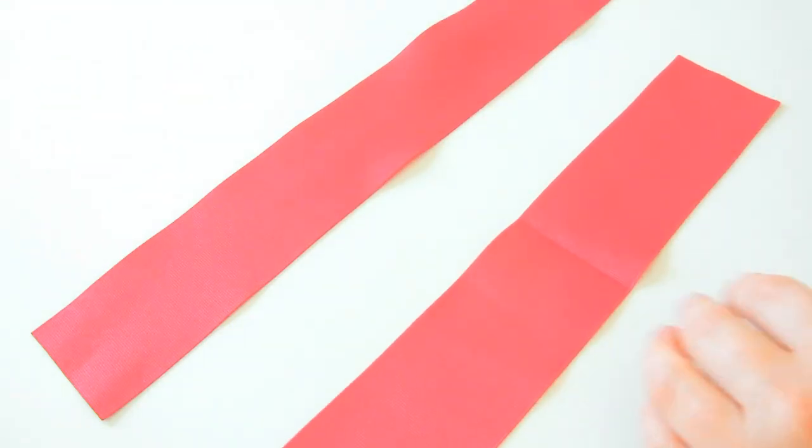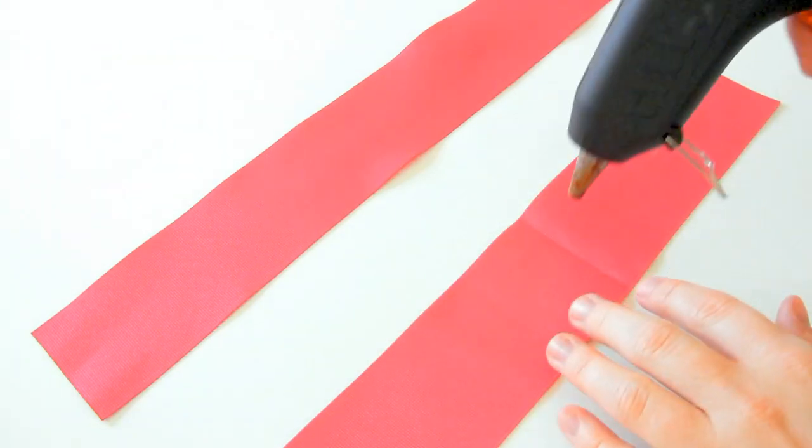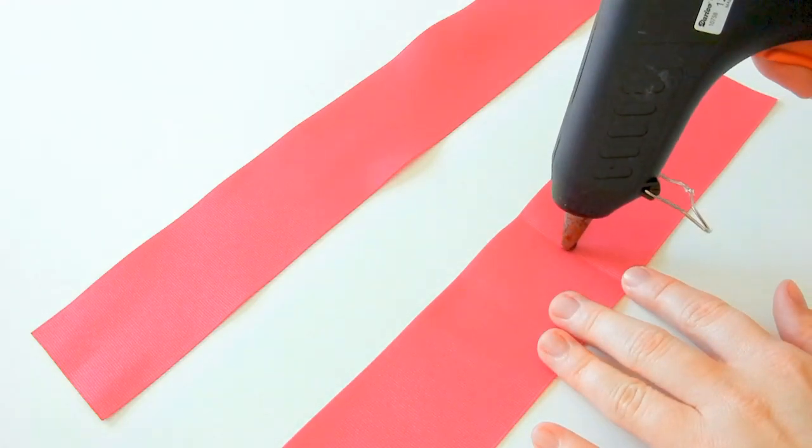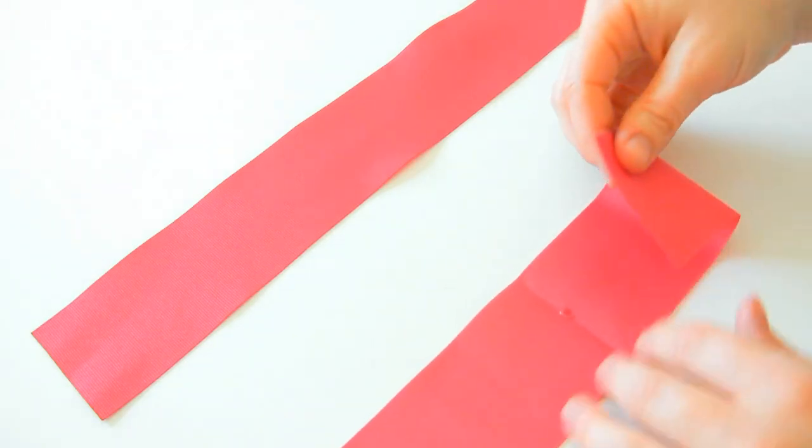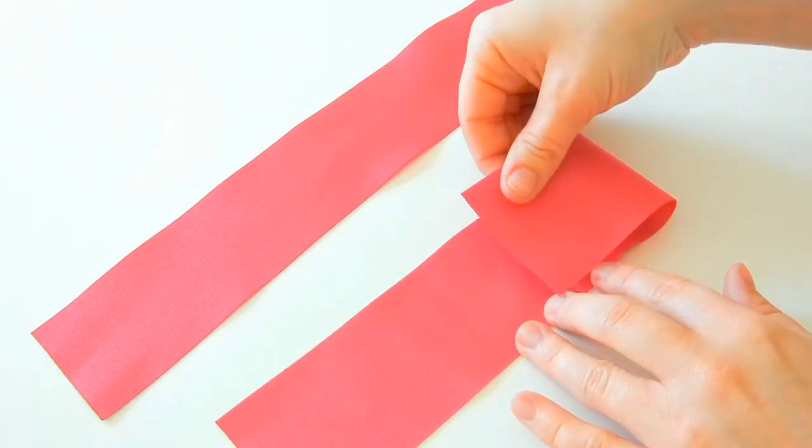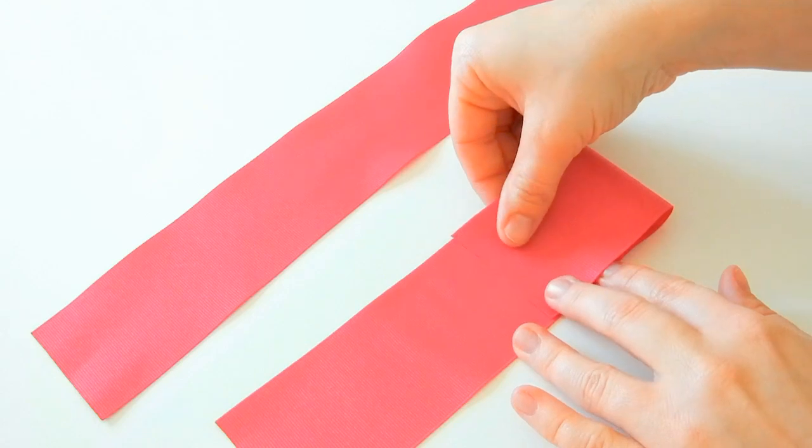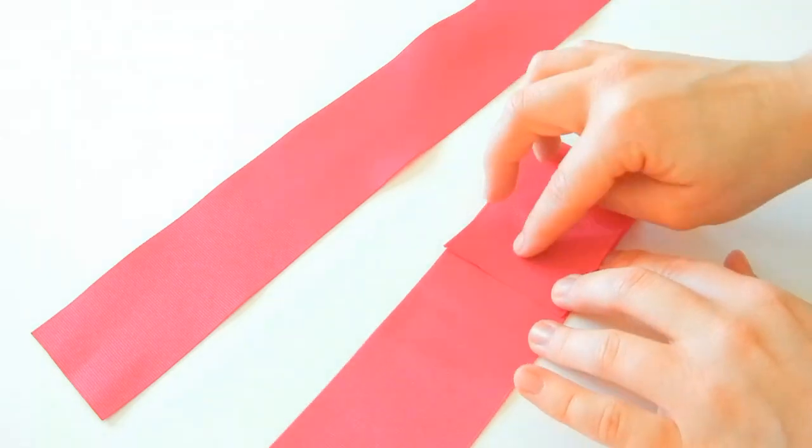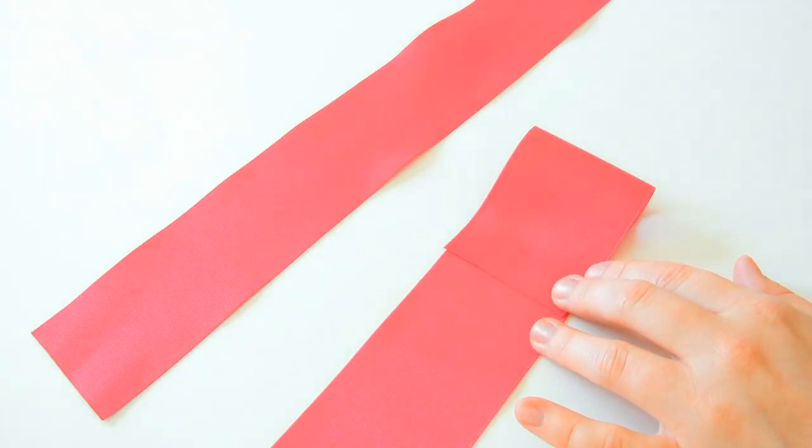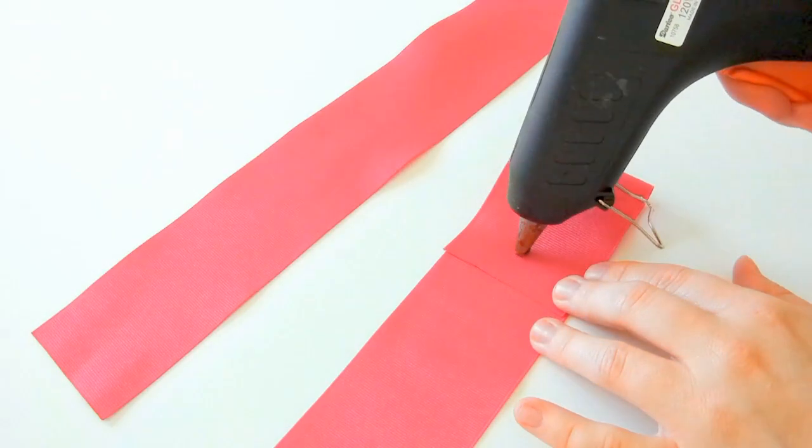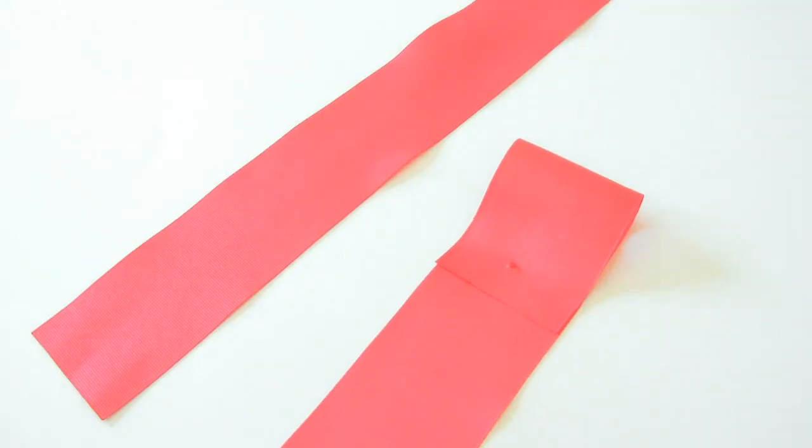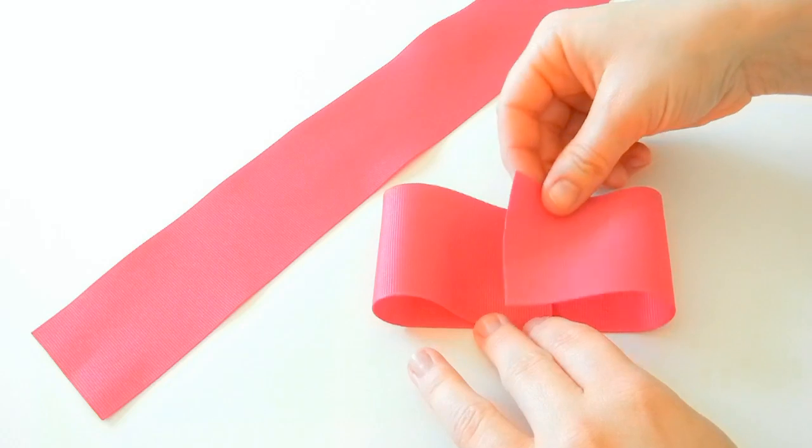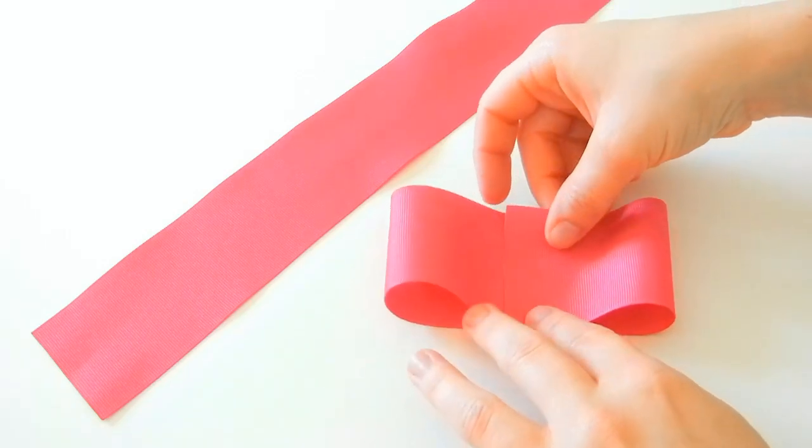Take a dab of glue just right in the very middle of the ribbon, just the slightest amount. Then bring one side over and overlap it a little bit in that same spot. Overlap it just a little bit.